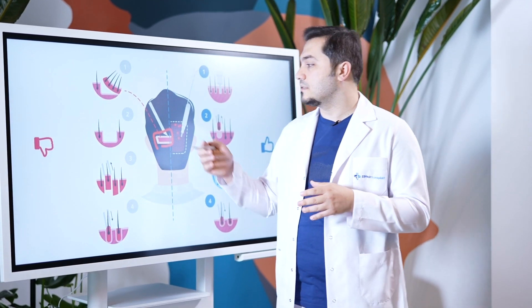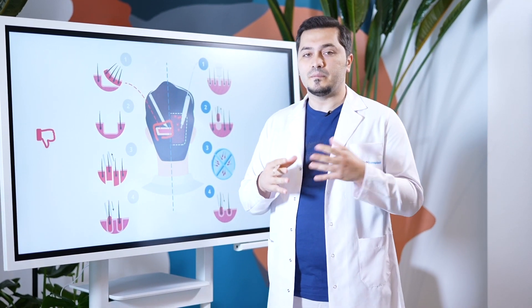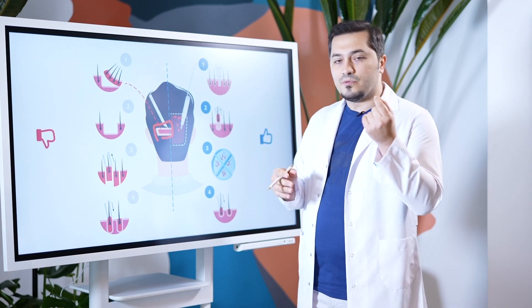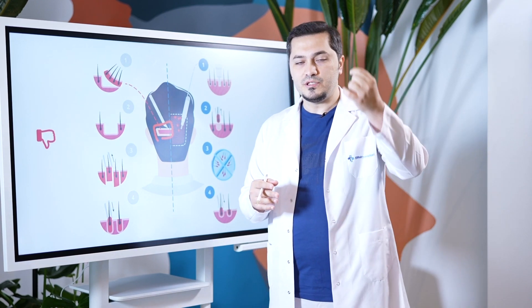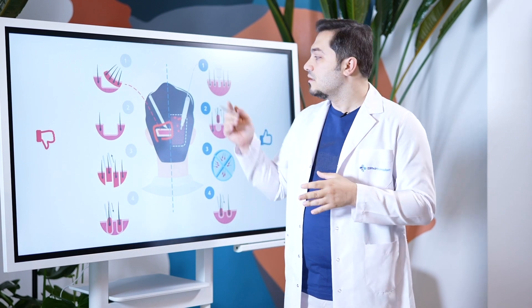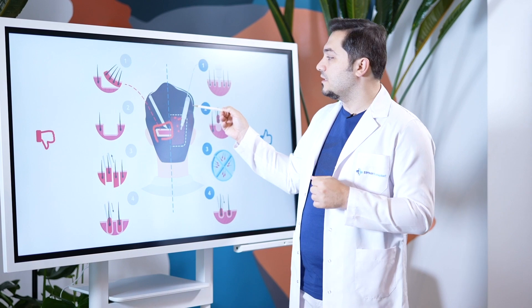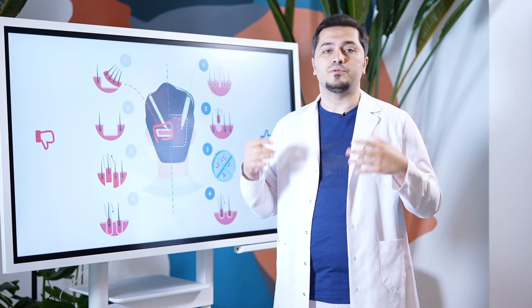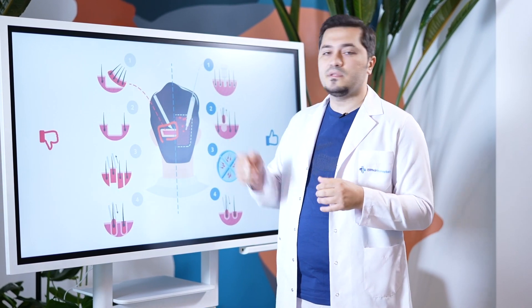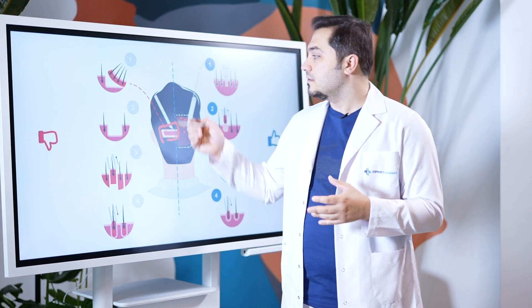The results of transplantation with FUT look very artificial, because this technique does not allow a very high number of grafts to be transplanted, and the units are very large. In contrast, the results with the FUE technique are very natural. We can transplant 100 grafts per square centimeter with FUE, but with FUT technique, a maximum of only 20 grafts is possible.